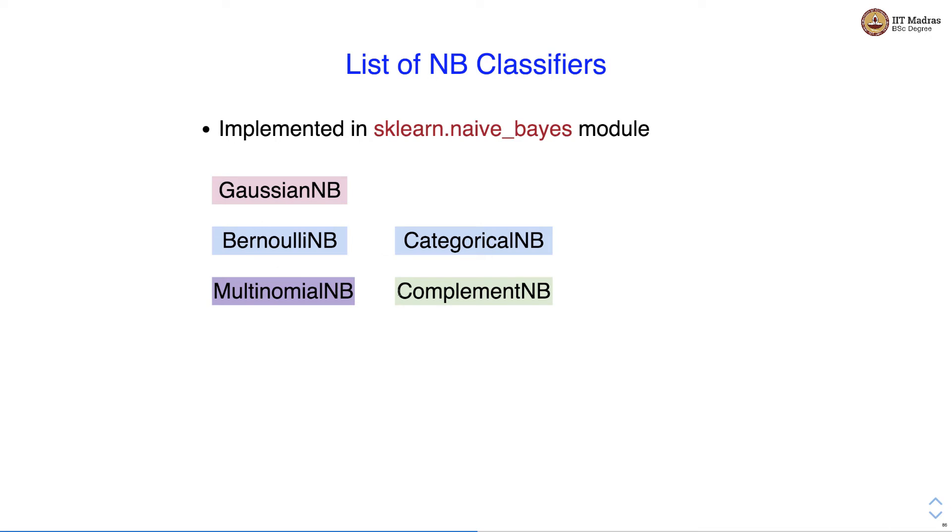When we have class imbalance issues in the dataset, we use ComplementNB. In case of class imbalance, ComplementNB has been found to be performing better than MultinomialNB.